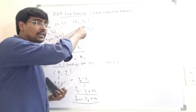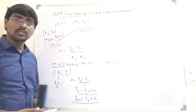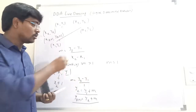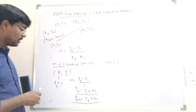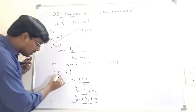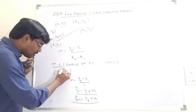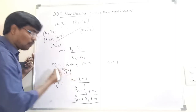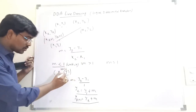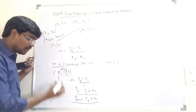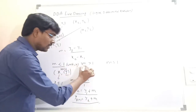For the DDA line drawing algorithm, we use round-off operations to plot integer values. So the plotted point is (xk+1, round(yk + m)).